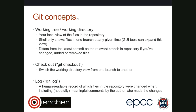The log, viewed using git log, is a human-readable record showing the version history — when changes were made and committed, and some description of those changes as provided by the author at commit time. When you commit, you always need to add some information.